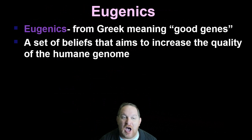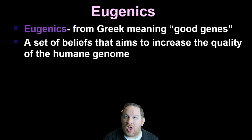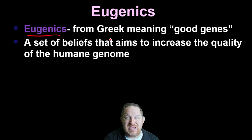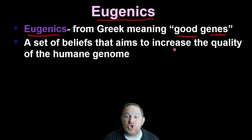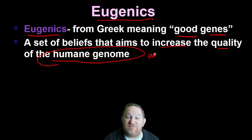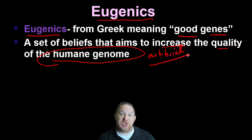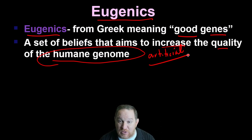This field of study is known as eugenics, and there's a long dark history of it in our country and in the world. Eugenics comes from the Greek meaning 'good genes.' Someone who believes in eugenics believes there is benefit to increasing the quality of the human genome — artificially. While evolution through natural selection has been changing the human genome over time, this would be a deliberate effort by humans to artificially change our genomes.